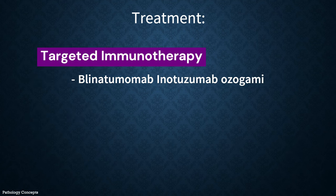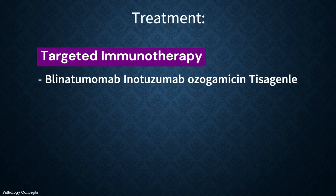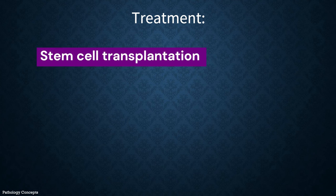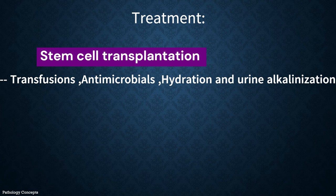Targeted immunotherapy drugs are available for treatment of relapsed or refractory ALL. Stem cell transplantation including reinduction chemotherapy or immunotherapy offers the greatest hope for long-term remission or cure if an HLA-matched sibling is available. Supportive care may include transfusions and antimicrobials, which are necessary because patients are immunosuppressed.